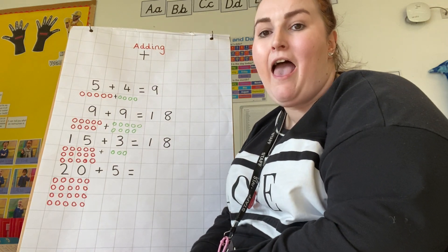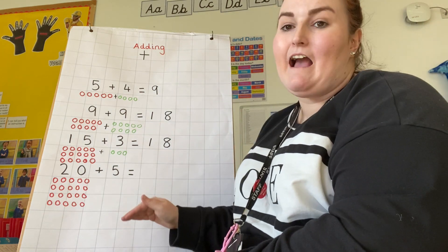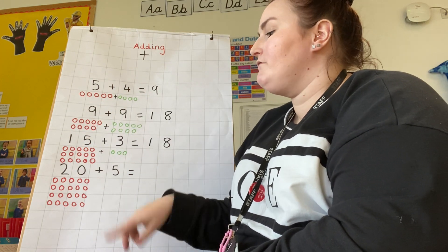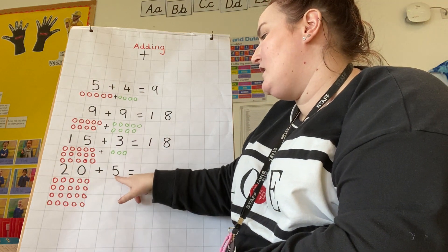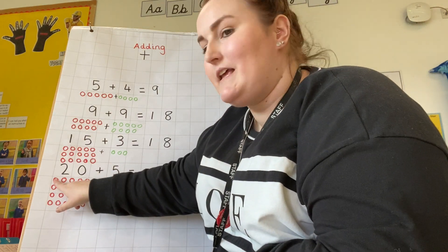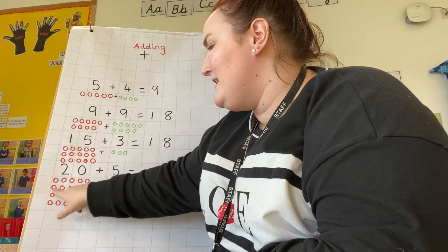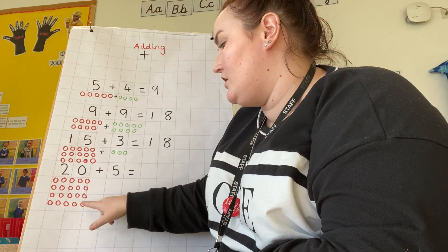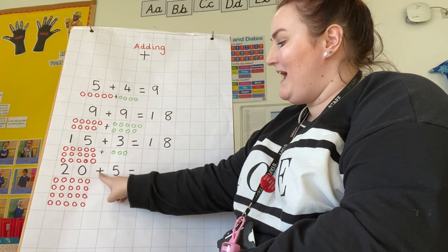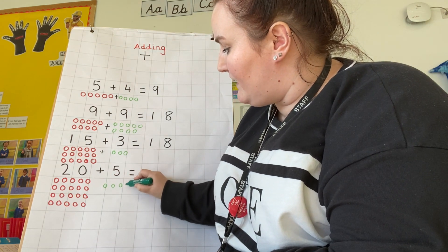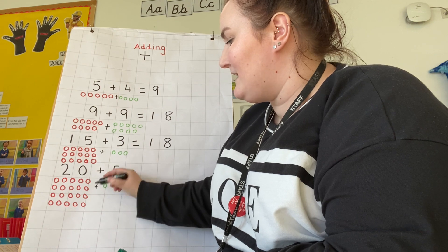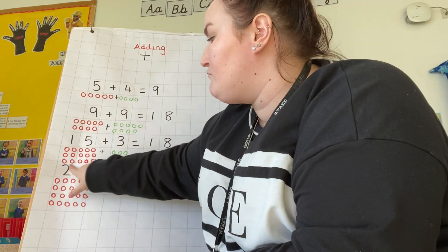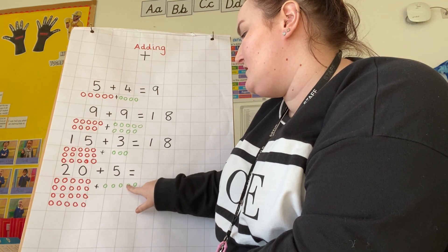Onto my final one that we're going to do all together, and then you'll have a go on your own. You can set it out exactly how I've done it, drawing those counters — use some colored crayons, just draw some circles to represent it. Reading my number sentence first: twenty add five equals. I've represented the number twenty: one, two, three, four, five, six, seven, eight, nine, ten, eleven, twelve, thirteen, fourteen, fifteen, sixteen, seventeen, eighteen, nineteen, twenty. Now adding five: one, two, three, four, five. I know I've got twenty, so I'm going to count on from twenty: twenty, twenty-one, twenty-two, twenty-three, twenty-four, twenty-five.